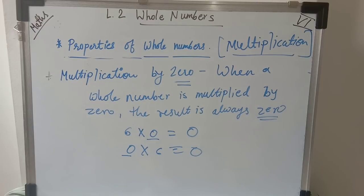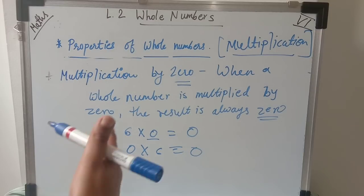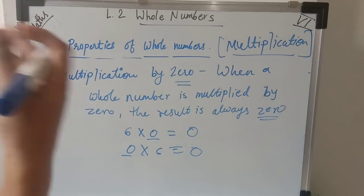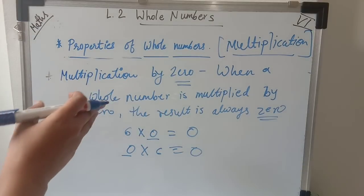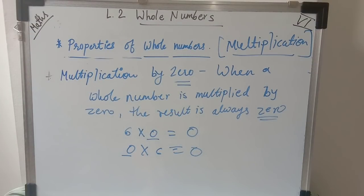In the multiplication of whole numbers, we have seen: closure property — the product of any two whole numbers is also a whole number; commutative property — the product remains the same after changing order; associative property — product of three or more whole numbers remains the same after changing their order; multiplicative identity — multiplying by one gives the same number; and multiplication by zero — result is always zero.